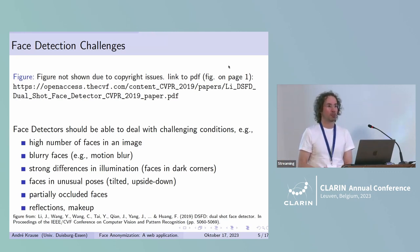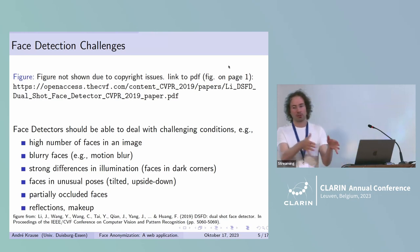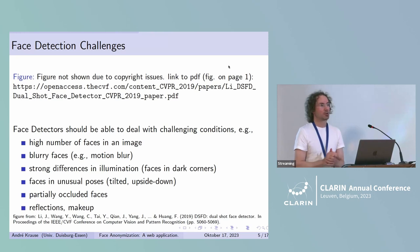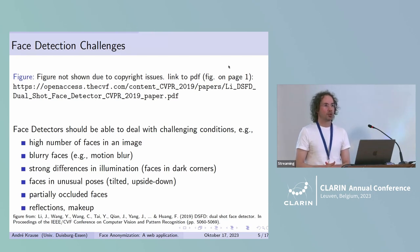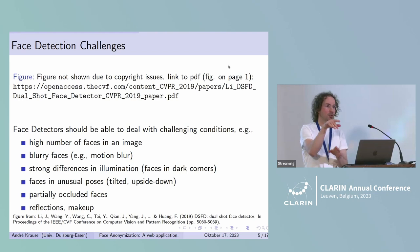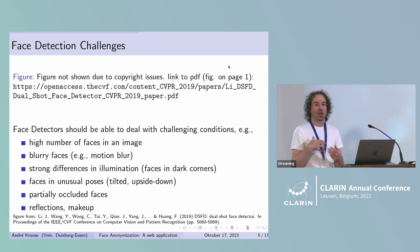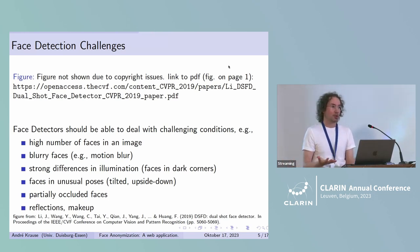Next, we might have blurry faces. Imagine you have a camera that is moving quickly — then you might have motion blur, and a good face detector should deal with that. Further, we might have strong differences in illumination. You might have faces or humans that sit in a dark spot, and then also have properly lit faces. The detector has to deal with these strong differences in illumination.